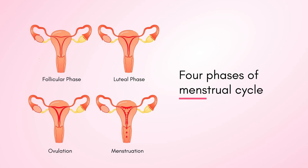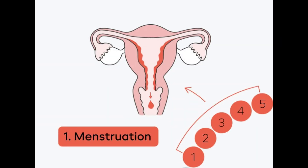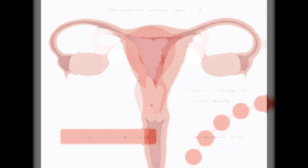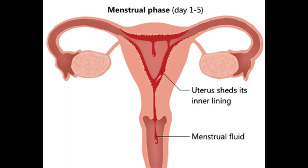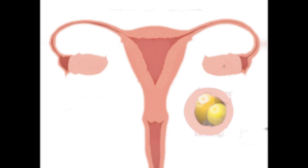The menstrual cycle has four main phases. Let's go through them one by one. The first is the Menstrual Phase, from Day 1 to 5. This is the phase where the uterine lining, also called the endometrium, is shed, resulting in menstrual bleeding. It marks the start of a new cycle.